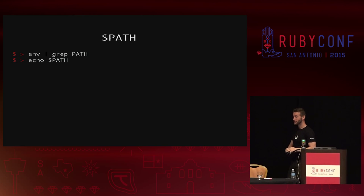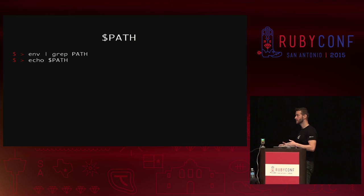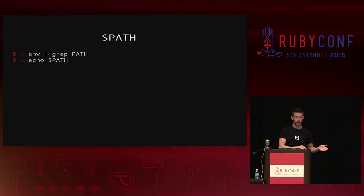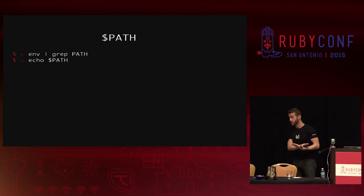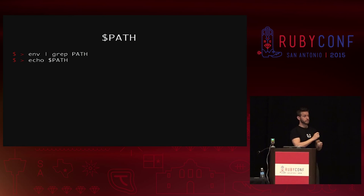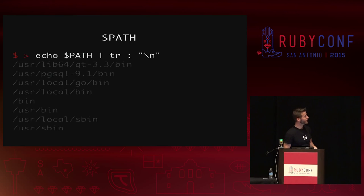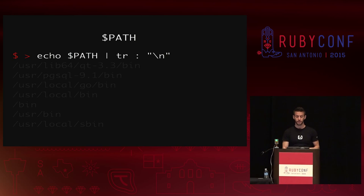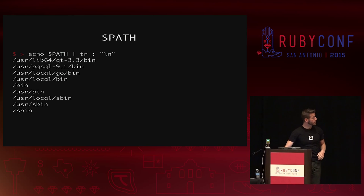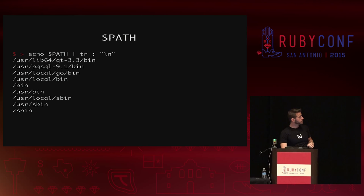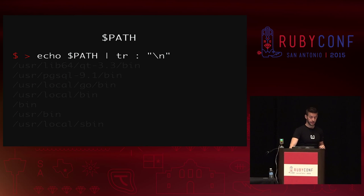Let's talk about the most important variable of all: PATH. PATH is slightly misnamed because it's actually a list of paths — a colon-separated list of places the operating system looks for commands to run. You can type 'env | grep PATH' or just 'echo $PATH'. One note: you set environment variables without the dollar sign (X=Y), but you read them with the dollar sign (echo $X). That's just the syntax. You can pipe PATH through the translate tool to turn colons into newlines, which makes it much more readable.